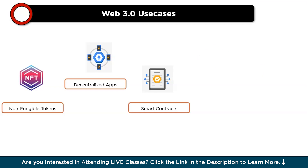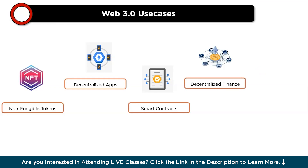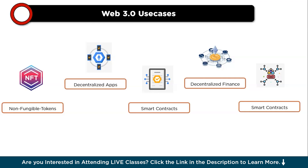Smart contracts are self-executing contracts with predefined rules and conditions written in code. They automatically execute and enforce agreements when specific conditions are met, without intermediaries, powering various decentralized applications and enabling trustless transactions on blockchain networks. DeFi, or decentralized finance, refers to financial services built on blockchain networks aiming to democratize traditional financial systems, offering lending, borrowing, trading, and asset management without banks or brokers. DAOs — decentralized autonomous organizations — are governed by smart contracts and operated collectively by members using transparent, decentralized voting mechanisms for collaborative decision-making.